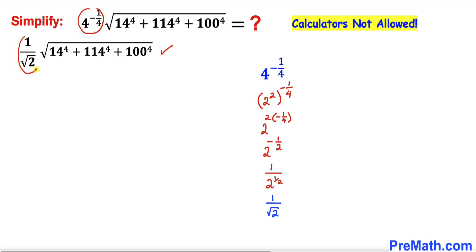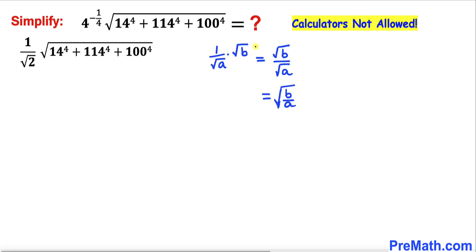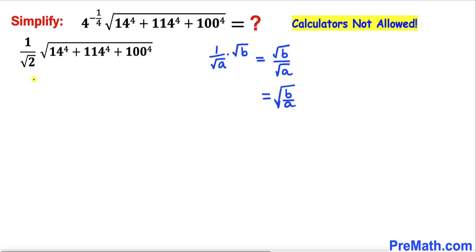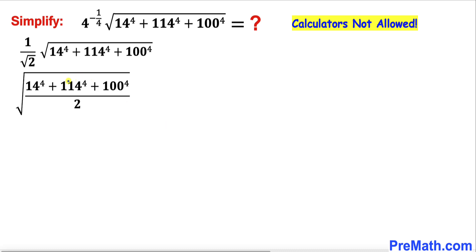As you can see in the next step, I have replaced this part with the simplified value 1 over square root of 2 in the front. Recalling the basic rule, we can write the expression as the square root of 14 to the power 4 plus 114 to the power 4 plus 100 to the power 4, all divided by 2.